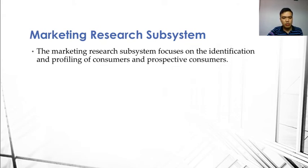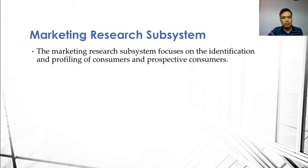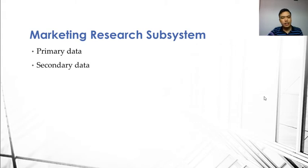The next subsystem is the marketing research subsystem. It focuses on the identification and profiling of consumers and prospective consumers. Data on consumer needs and wants helps management decide what products to develop for the market. For example, as consumers become more health conscious, management may decide on introducing food products that are very low in fat. On the other hand, when management finds out that 90% of men and 80% of women wear denims, it puts denims production into consideration.